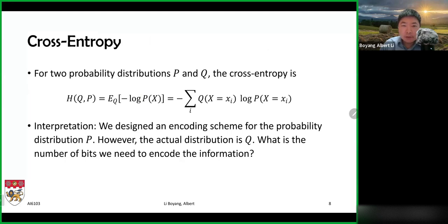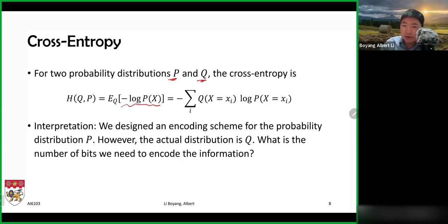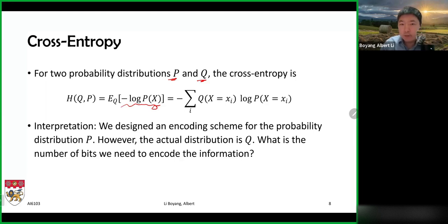For two probability distributions p and q, the cross entropy is defined as follows: we have the encoding scheme designed for events under distribution p — the negative log p is the theoretical lower bound for the number of bits needed to transmit an event x under distribution p. This is an optimal encoding scheme. However, that optimality depends on the distribution p. If the real distribution is not p but q, then you have to compute the expectation using the q distribution.